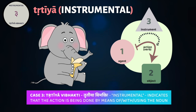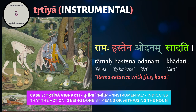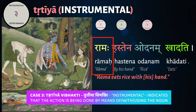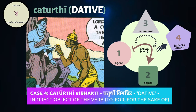The third case is the 'tritiya vibhakti,' the instrumental, used when the noun is the instrument by means of which the action of the verb is done. For example, 'ramaha hastena odanam khadati' means 'Rama is eating rice with his hand.' Here 'ramaha' is nominative, 'odanam' (rice) is accusative, and 'hastena' is in the instrumental — 'hasta' means hand and the ending 'ena' is the instrumental singular ending.